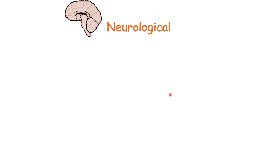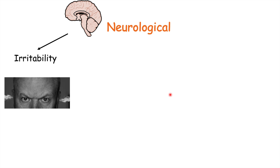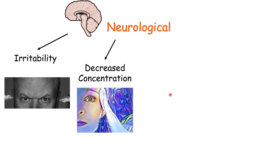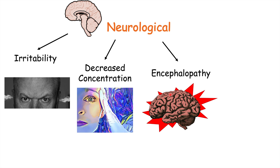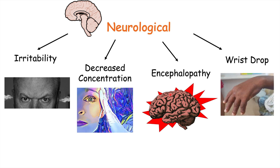There are particular neurological effects as well. These include irritability and being more aggressive than usual, decreased concentration, and encephalopathy — an altered mental status or confusion, also termed lead encephalopathy. Wrist drop can also occur; this is a neuropathy of the radial nerve, so lead toxicity can cause radial neuropathy in which the patient is not able to raise the wrist.